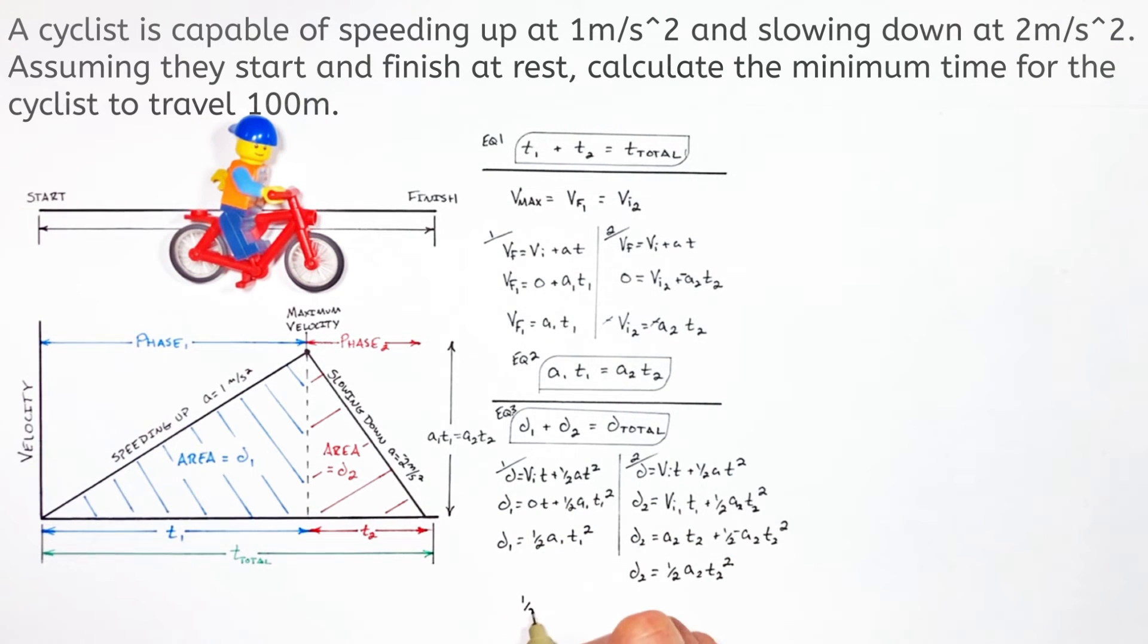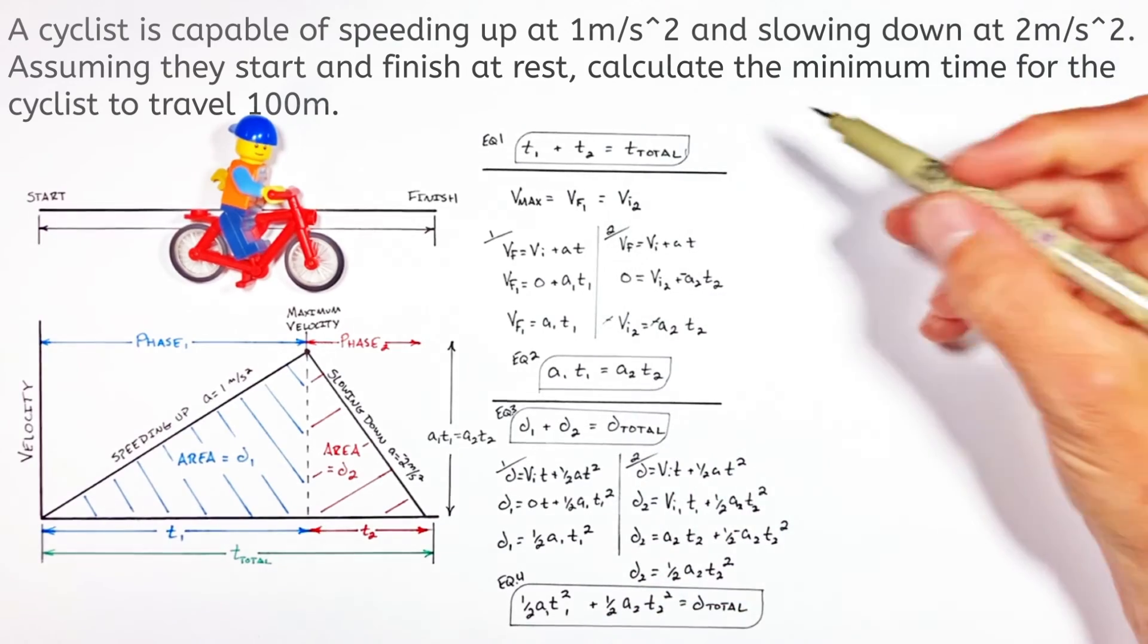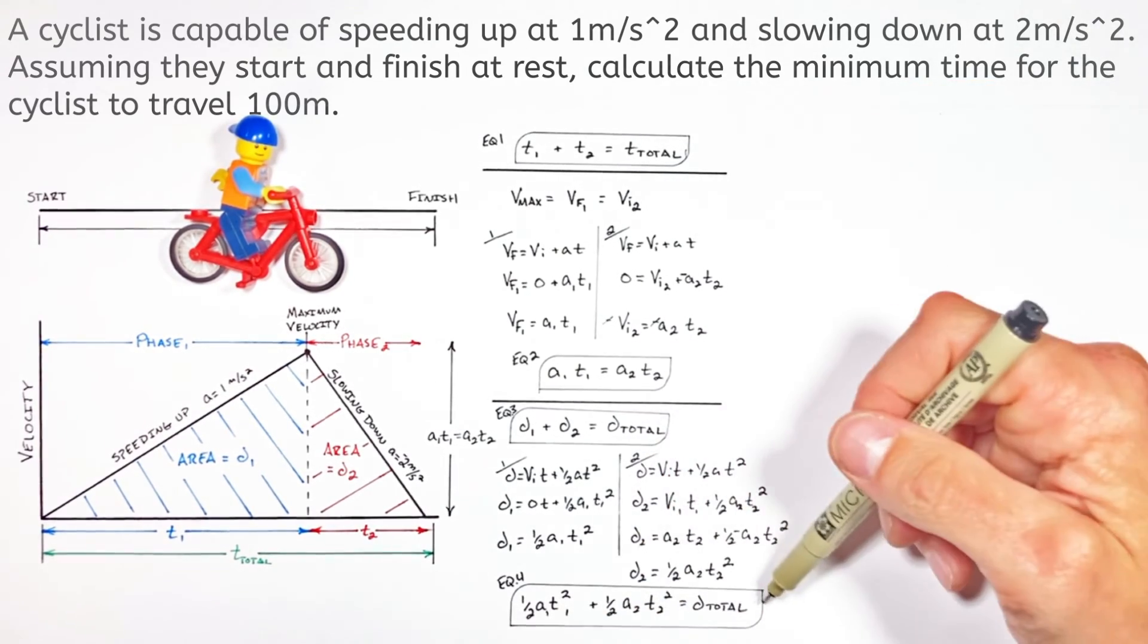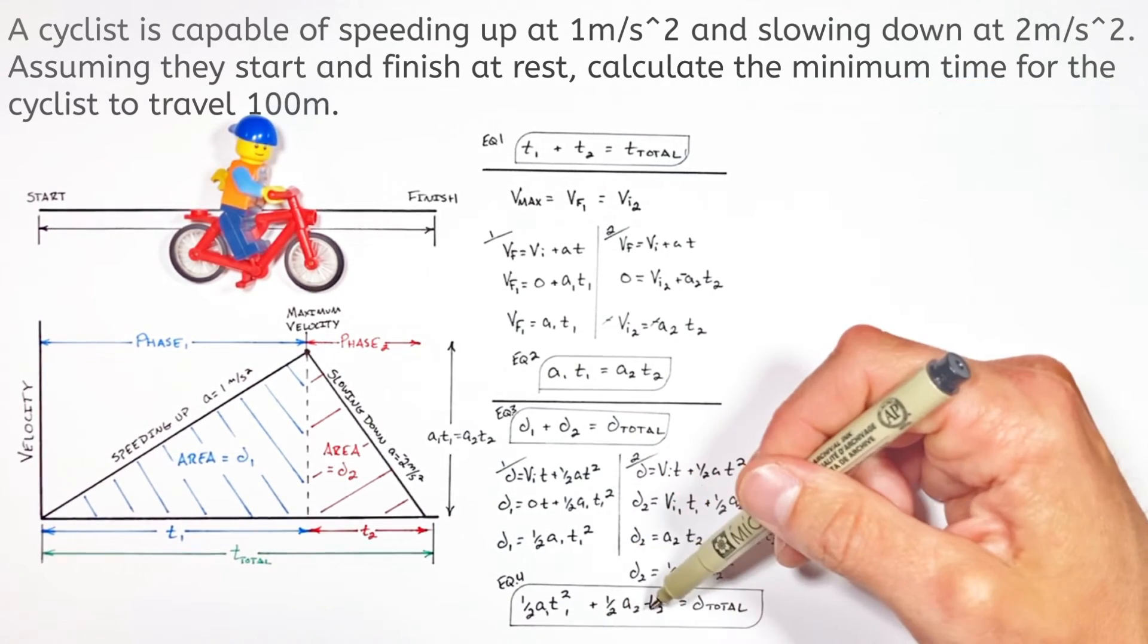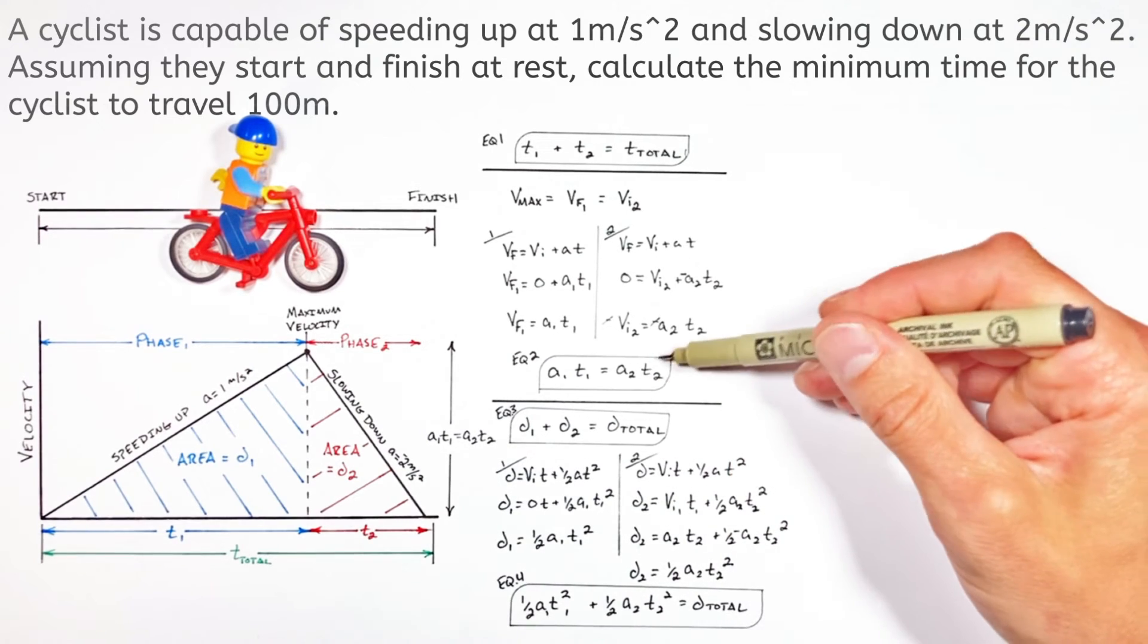So now we're going to take our two displacement terms and substitute them into equation three, giving us an equation with only two unknowns, our times. And you guessed it, I'm going to call this one equation four. So now we're going to solve for one of the times, how about T1, using just equations two and four.